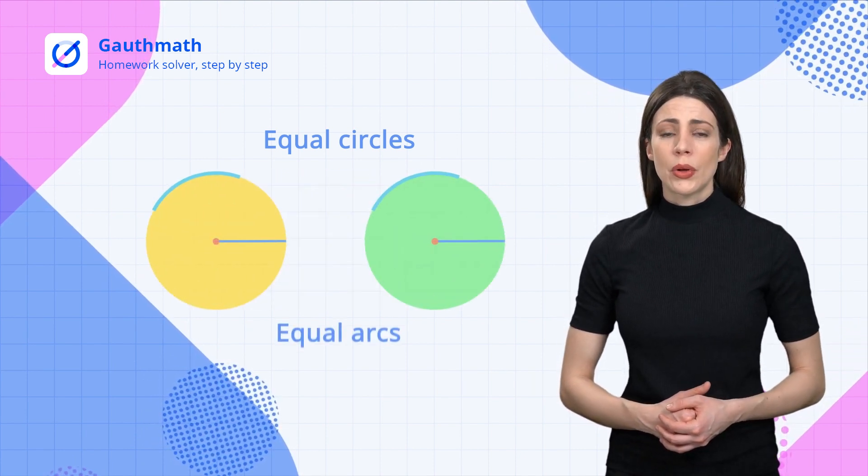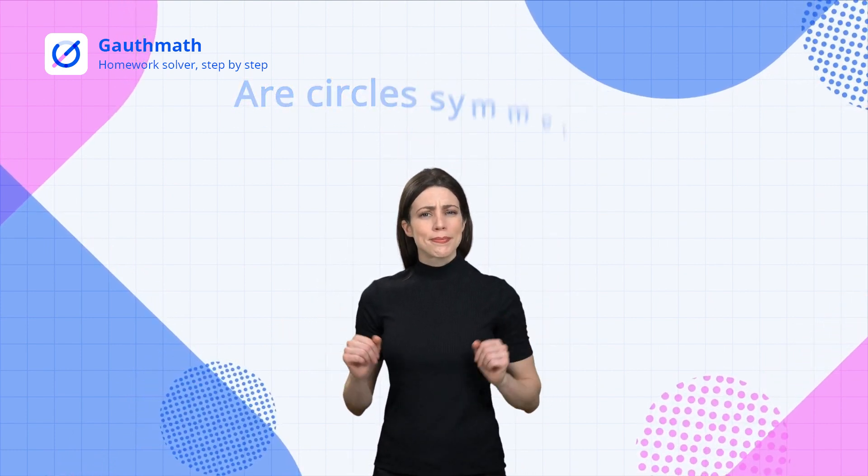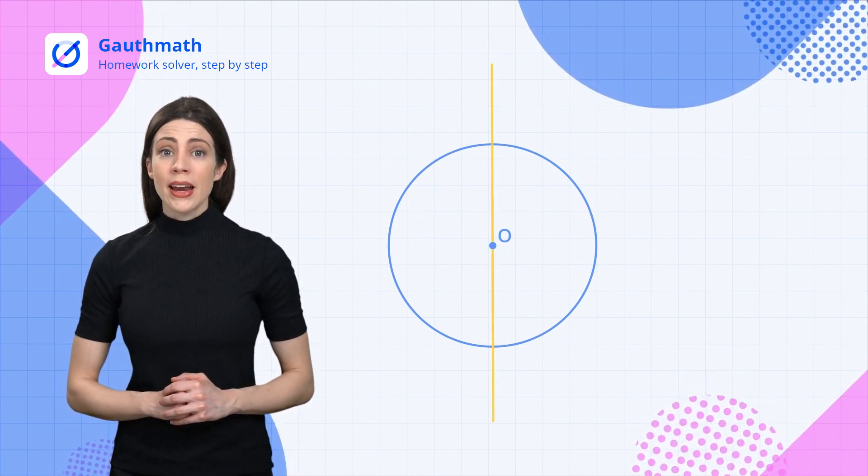Circles seem to be perfectly regular as a circle looks exactly the same from every angle. Are circles symmetric? All we need is to prove that the symmetric point about the line of the diameter of any point on the circle also lies on the circle.